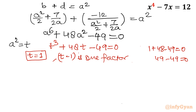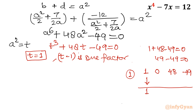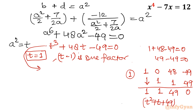Let me factorize using synthetic division with t = 1. The coefficients are 1, 0, 48, -49. After synthetic division, we get the quotient t² + t + 49. So the cubic factors as (t - 1)(t² + t + 49) = 0.